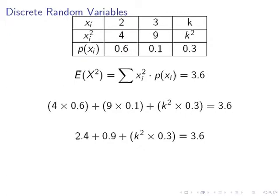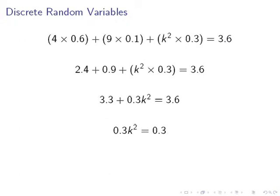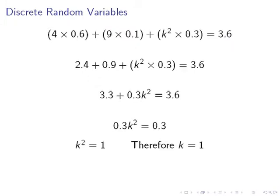So 2.4 plus 0.9 plus 0.3 times k squared, that gives us 3.6. If we add those two numbers together, 2.4 and 0.9, we get 3.3 plus 0.3 times k squared equals 3.6. We're going to subtract 3.3 from both sides, and we have 0.3k squared equals 0.3. So k squared equals 1, and therefore k is equal to 1.